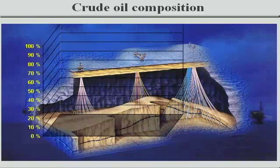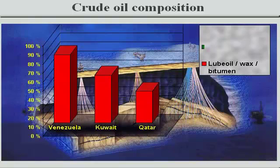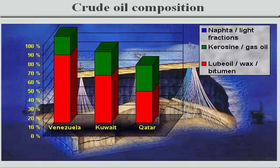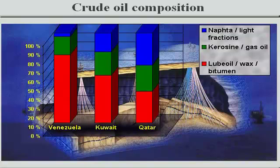Crude oils from different geographical locations can differ substantially in chemical composition. Consequently, the properties of various crudes — such as volatility, viscosity, and sulphur content — also vary widely. Although lubricant-based oils may, in theory, be manufactured from any crude oil, technical and economic considerations favour use of certain closely specified crude oils for this purpose.